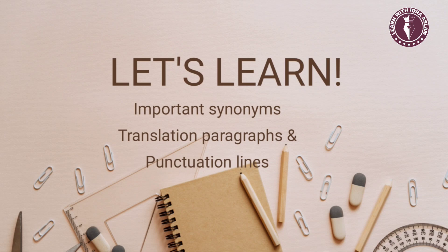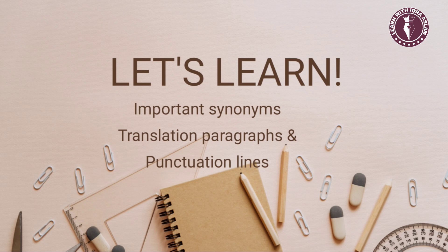So students, let me first tell you about the paper pattern. You have a 20-marks objective paper which includes 10-number synonyms in MCQ form, given from short stories, plays, and poems. Secondly, translation paragraphs: you are given an English paragraph from short stories which you have to translate into Urdu, and this question is 15 marks. The third one is punctuation lines — in any short story you are given a line which you have to punctuate, and this question is 5 marks. If you attempt it correctly, you can take all 5 numbers.